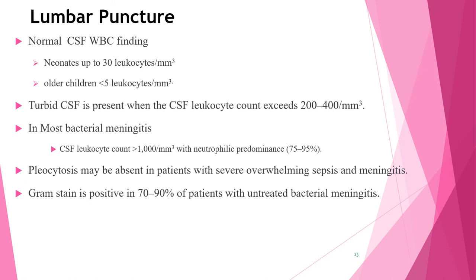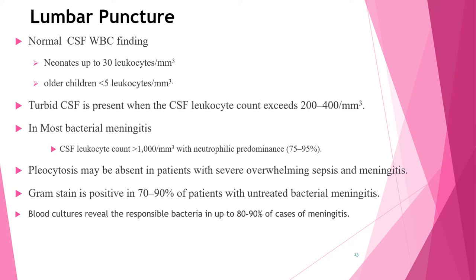Blood culture should be performed in all patients with suspected meningitis and identifies the responsible bacteria in up to 80–90% of cases. Elevation of CRP, ESR, and procalcitonin can be seen in both bacterial and viral meningitis and should not routinely be used alone to determine which patients should receive antibiotics.